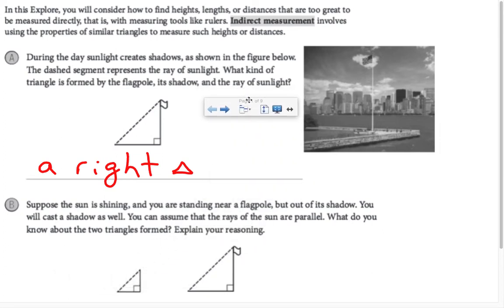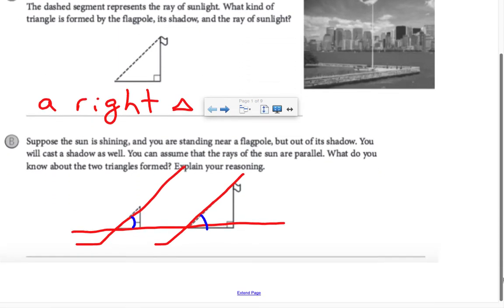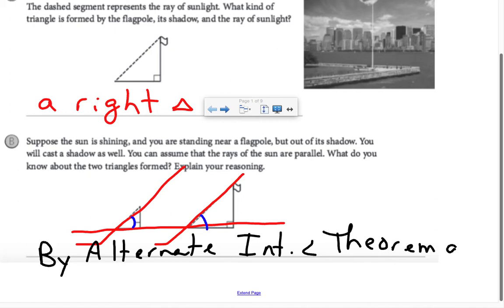Well, we already know that they have one pair of congruent angles, the right angles. And if we consider these parallel lines being cut by this transversal that is the ground, then we have these corresponding angles being congruent. So by alternate interior angles theorem and angle-angle similarity, the triangles are similar.